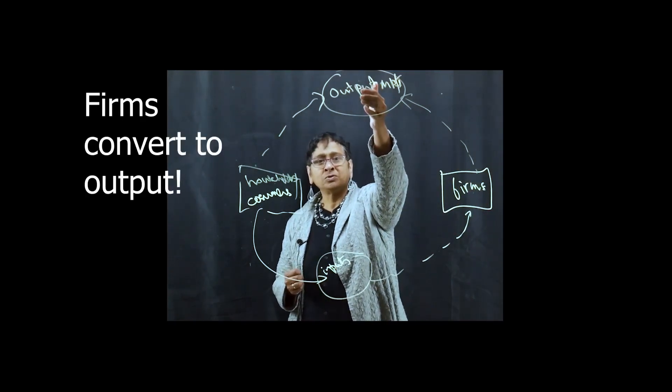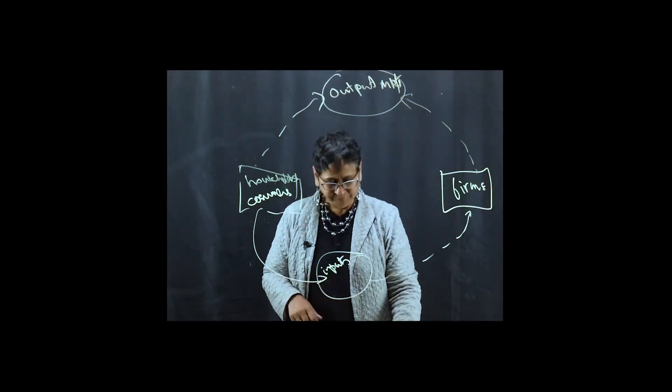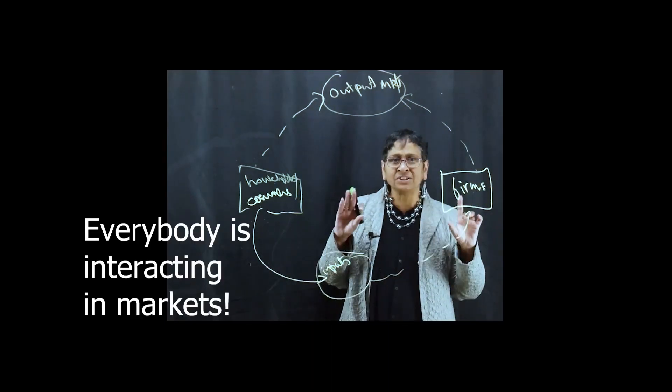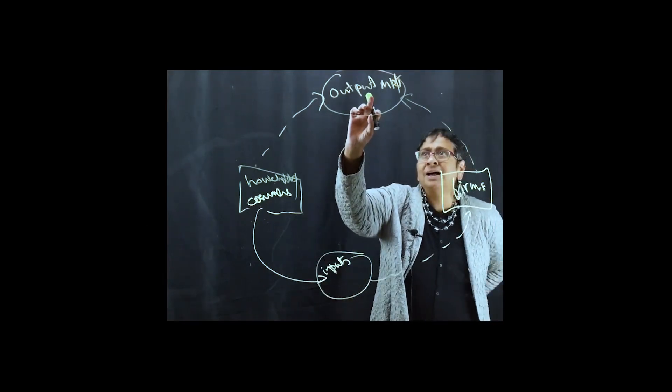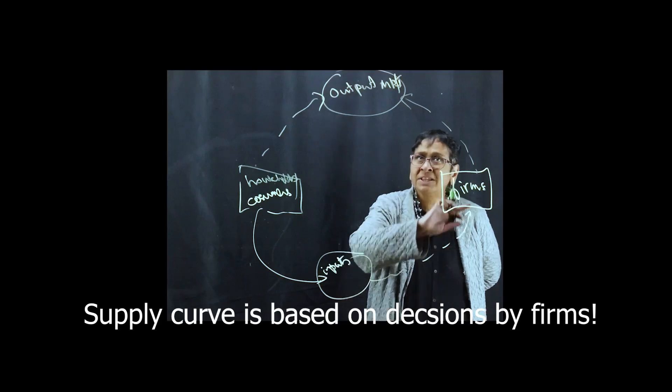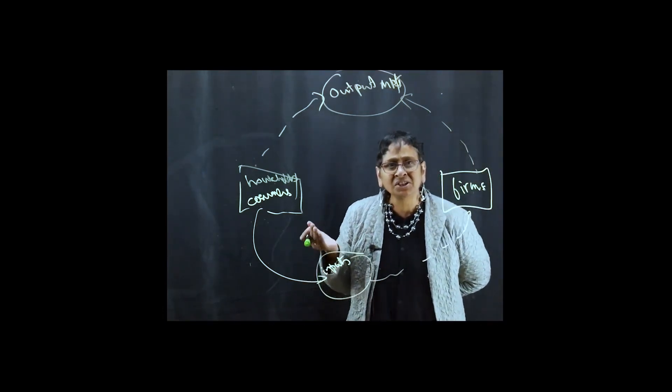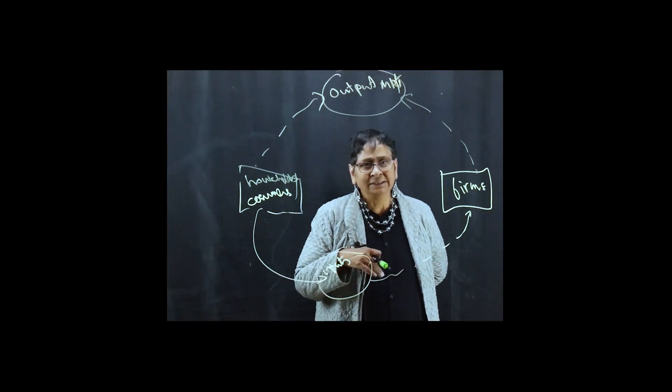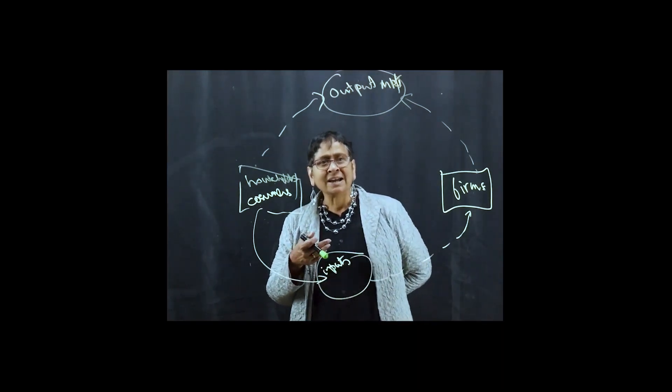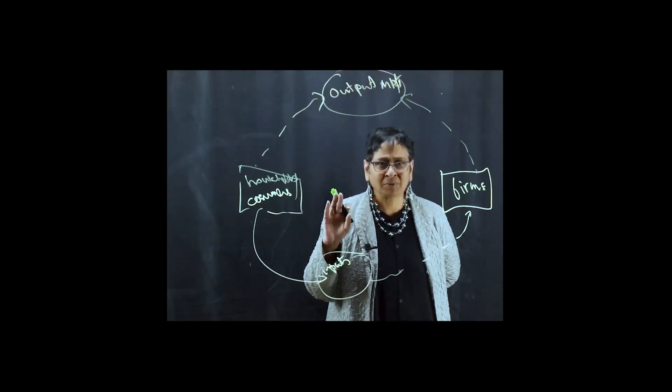So the supply curve, remember that everybody is interacting in markets. The supply curve in output markets is based on this piece of decisions by firms. How much input do I want to buy? How do I convert that into output and how much output do I want to sell at a particular price?